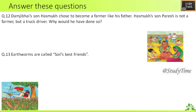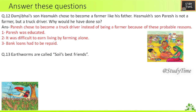Twelfth question — Damjibai's son Hasmukh chose to become a farmer like his father, but Hasmukh's son Paresh is not a farmer but a truck driver. Why? Paresh chose to become a truck driver instead of being a farmer because it was difficult to earn a living by farming alone. Bank loans also had to be repaid, so for these reasons Paresh chose a different career — that of a truck driver.